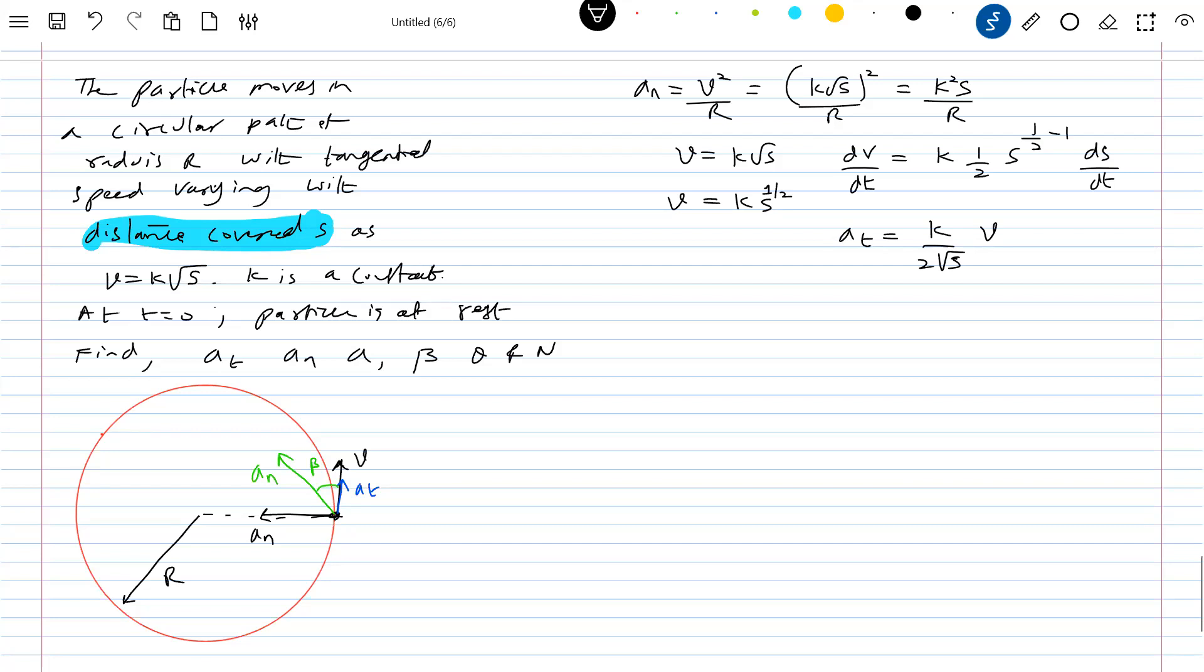I'm differentiating this equation with respect to time. dV by dt, dS by dt. So therefore, this will become V. Try to see this. What is value of V? V, we assumed it, K root S. So therefore, this will become A tangential equal to K square by 2. Look at this.